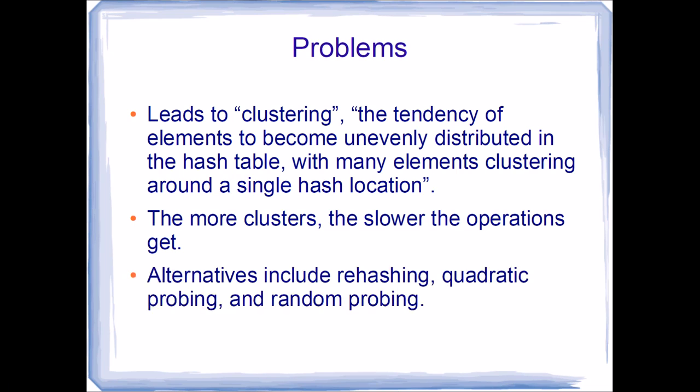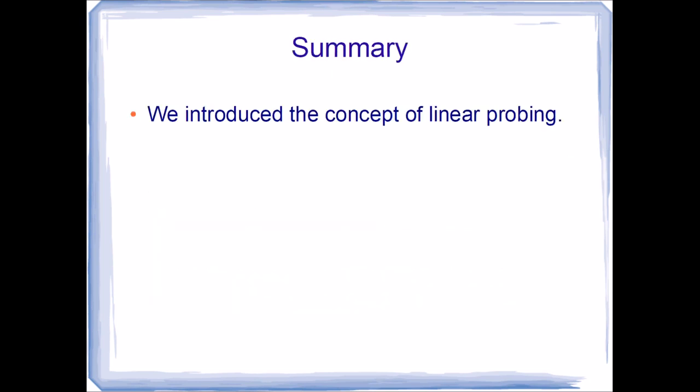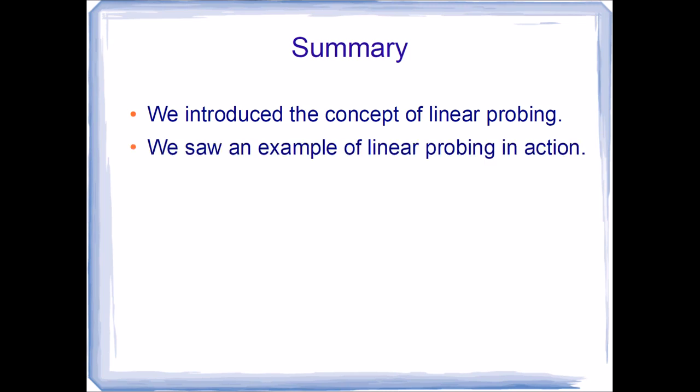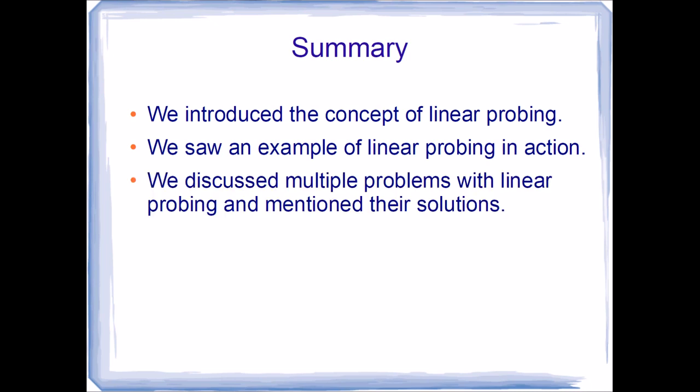Alternatives to linear probing include rehashing, quadratic probing, and random probing, each of which is discussed in the text. To summarize: we introduced the concept of linear probing, saw an example of it in action, and discussed multiple problems with linear probing along with their solutions.